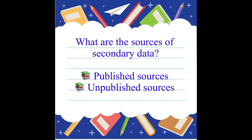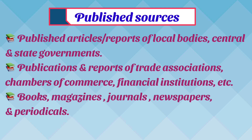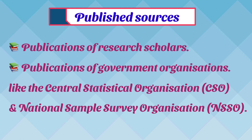Secondary data can be gathered from different sources which can be categorized into two categories: published sources and unpublished sources. A few major sources of published information are: published articles or reports of local bodies, central and state governments; publications and reports of trade organizations, chambers of commerce, and financial institutions; books, magazines, journals and periodicals; publications of research scholars; and publications of government organizations like the Central Statistical Organization and National Sample Survey Organization.